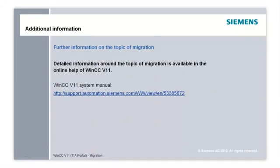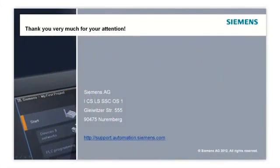If you need further information on the topic of migration of a WinCC Flexible project to WinCC version 11, please refer to the system manual or the online help of WinCC version 11. The system manual can be downloaded in the online support under entry ID 53385672. The SIMATIC software design has always provided for the largest possible migration scope at the lowest possible expense, meaning investment security for you.